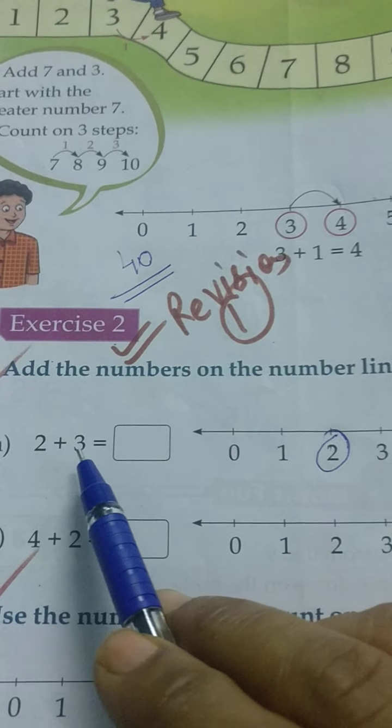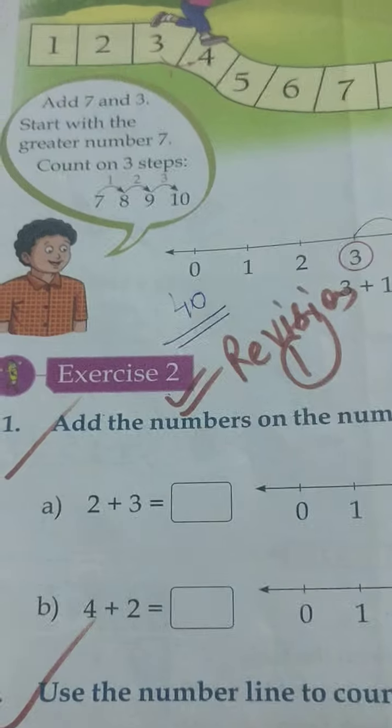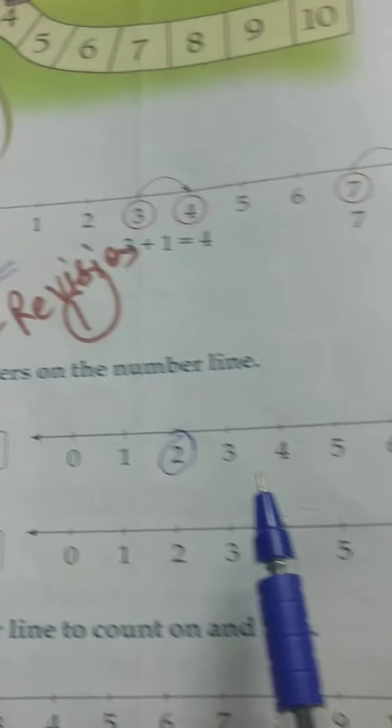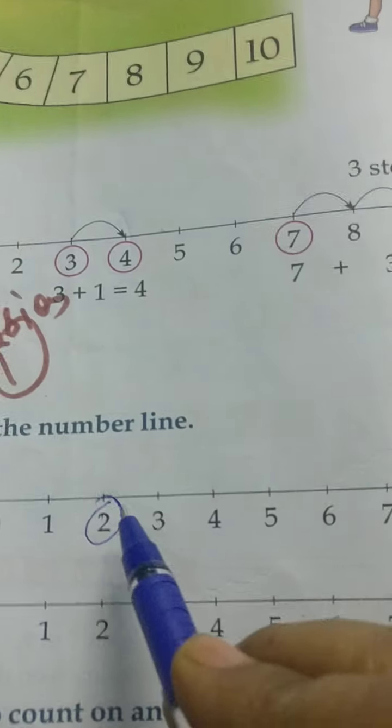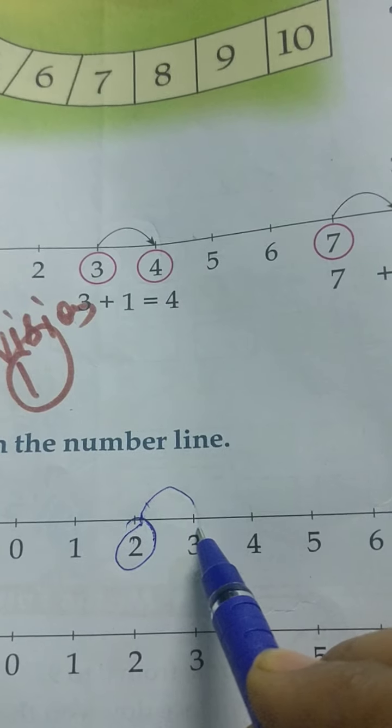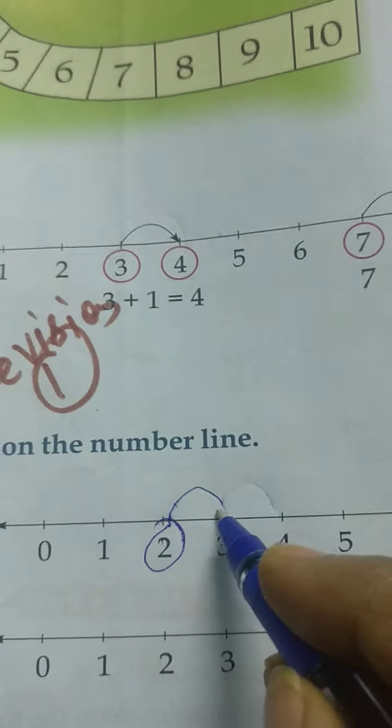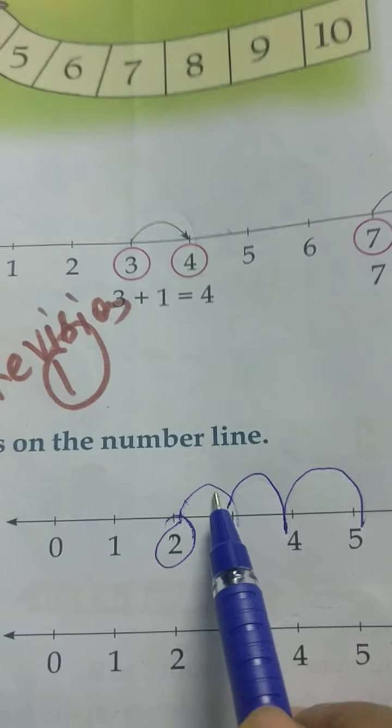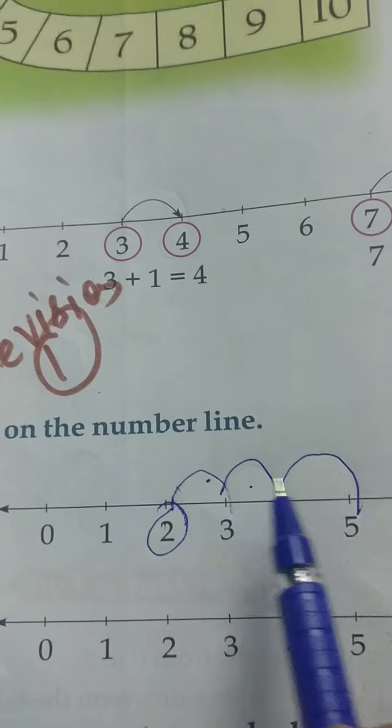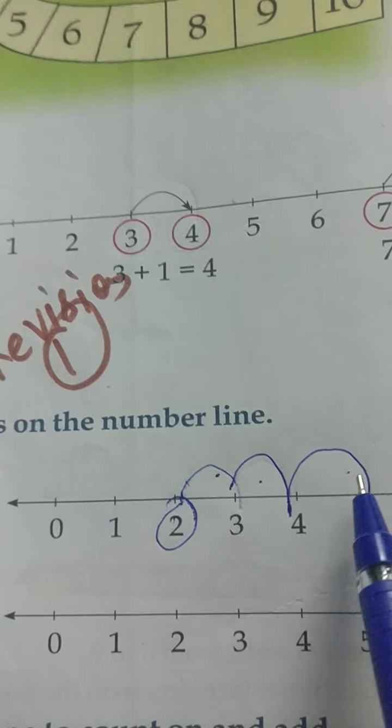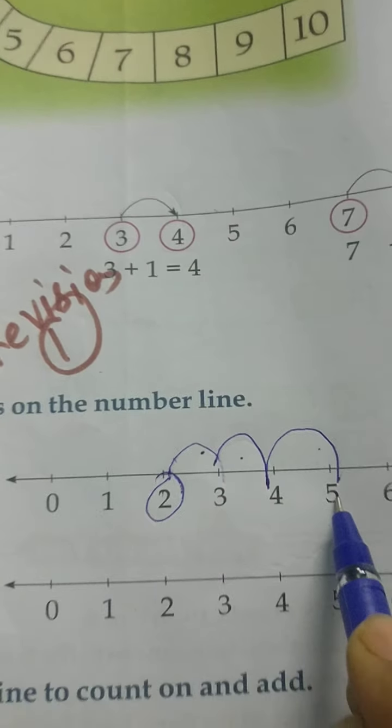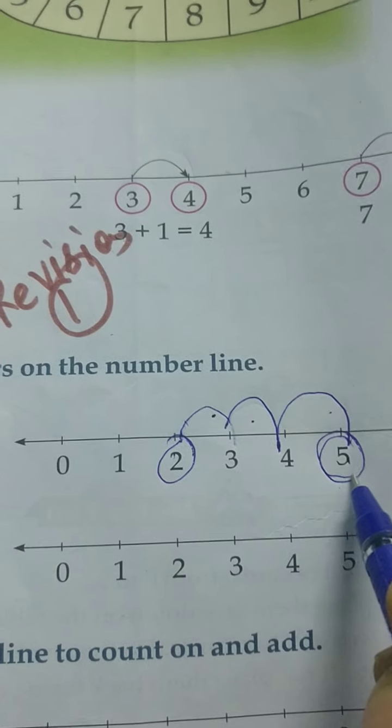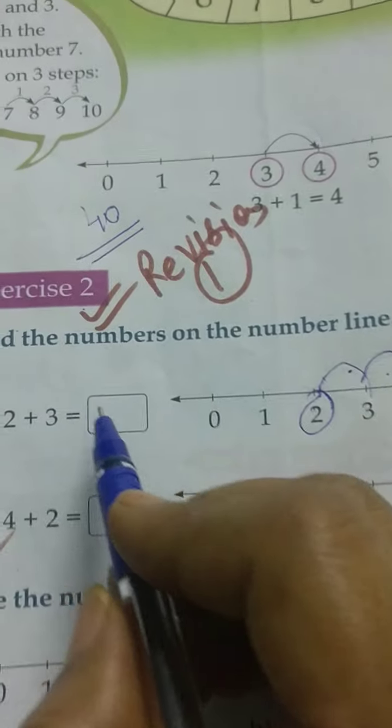From 2, we need to jump 3 steps. How many times do you need to jump? 3 steps. First step, second step, third step—one time, two time, and three time. After jumping 3 times, where are we standing now? On number 5. Good.